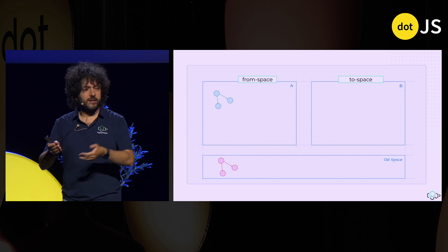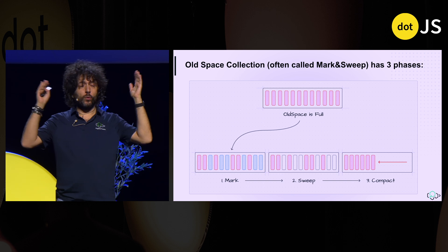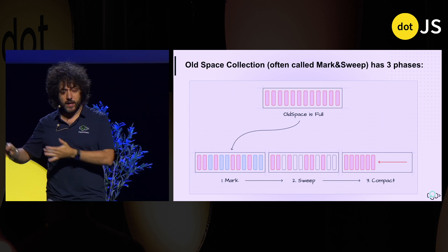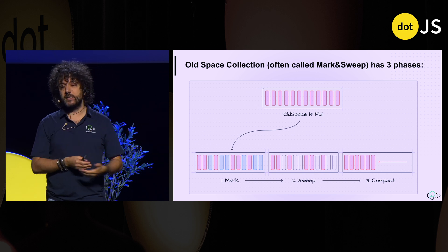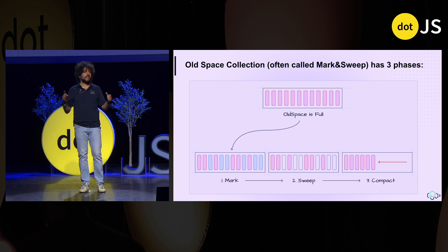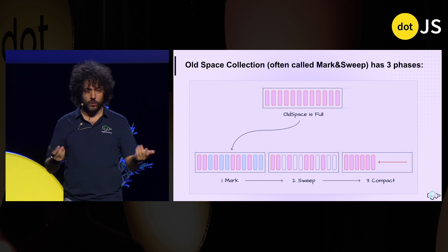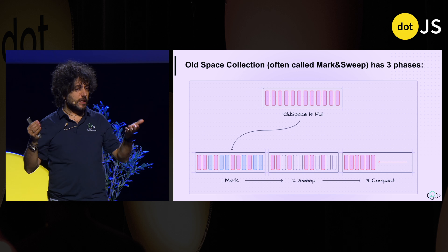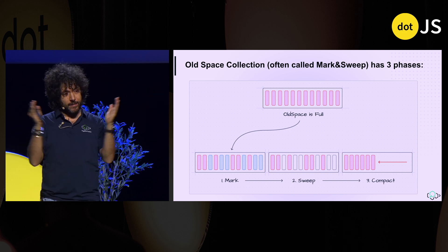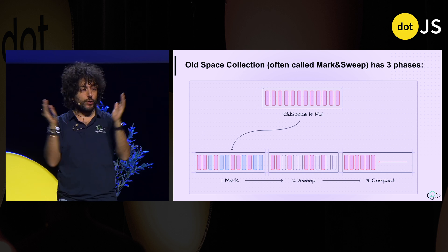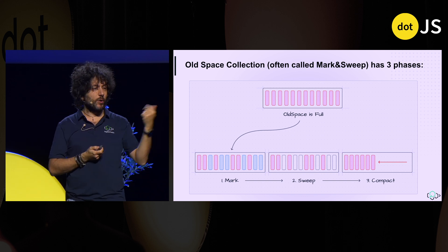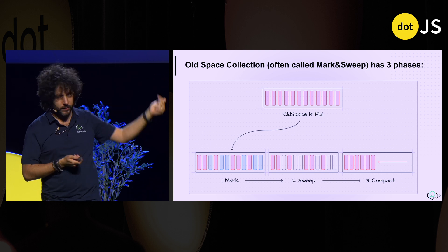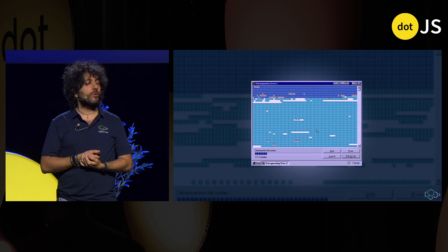Now we have objects in Old Space getting dusty. What happens when Old Space is full? V8 does a mark pass: it marks everything that is not used as empty, and then shrinks the memory. All of this happens on a worker thread — it's all parallel. You don't see it happening, but it happens all the time while our application runs. It's only when compact happens that our Node app actually reduces memory consumed. This process looks a lot like defragging in Windows 95.